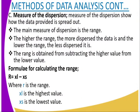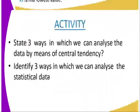Then we go to the last one, which is the measure of dispersion. The measure of dispersion shows how the data provided is spread out. The main measure of dispersion is the range. The higher the range, the more dispersed the data is, and the lower the range, the less dispersed the data is. The range is obtained by subtracting the lowest value from the highest value. The formula is: Range = XL − XS, where XL is the highest value and XS is the smallest value.